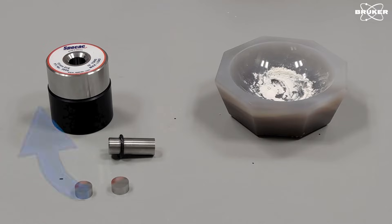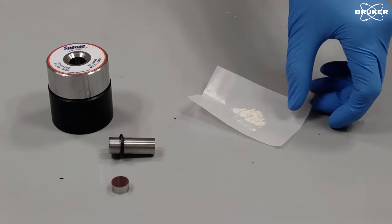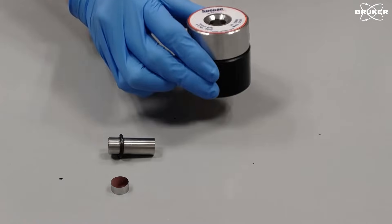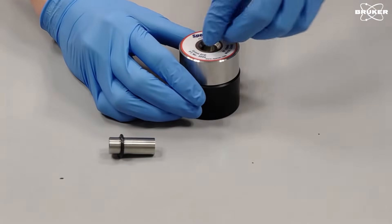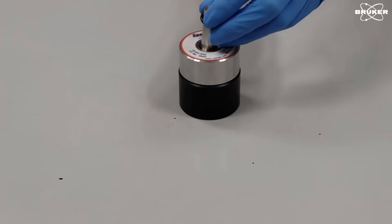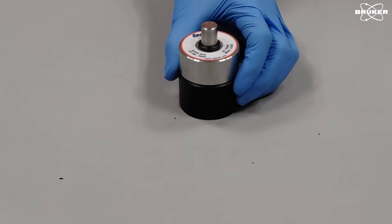Now insert the first pressing pellet. Next fill in the mixture. Compress the sample KBR mixture a little bit by tapping and insert the second pressing pellet. The plunger comes last. Now off to the press.